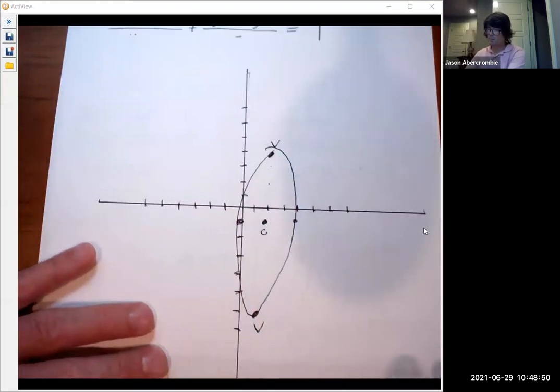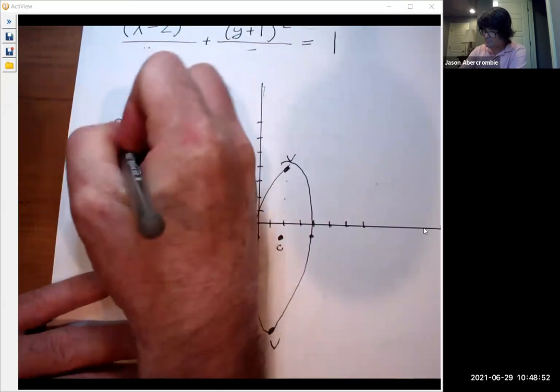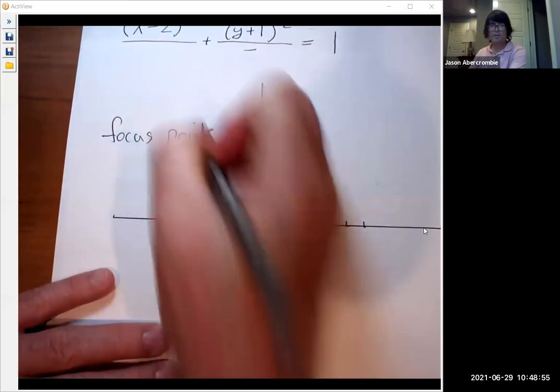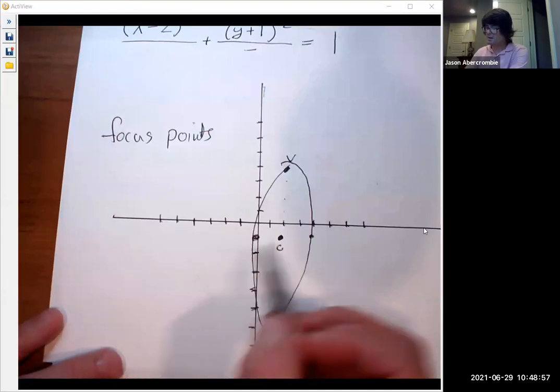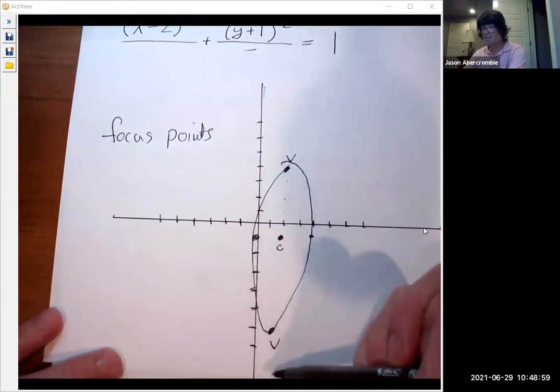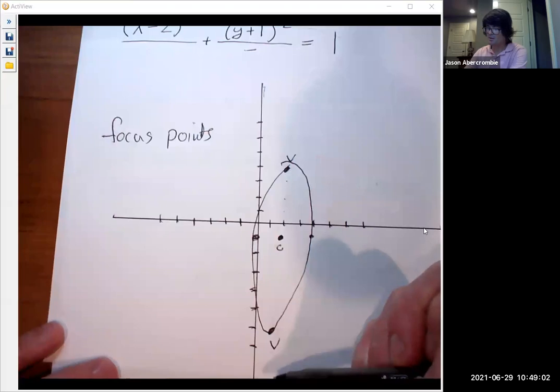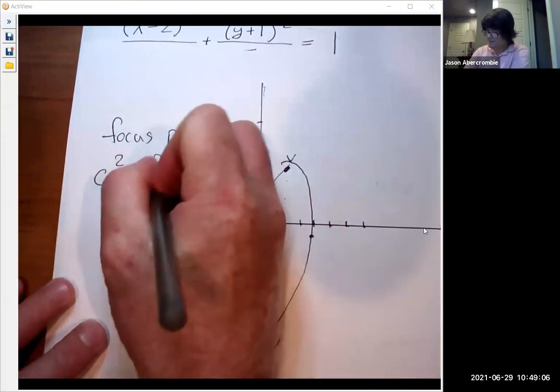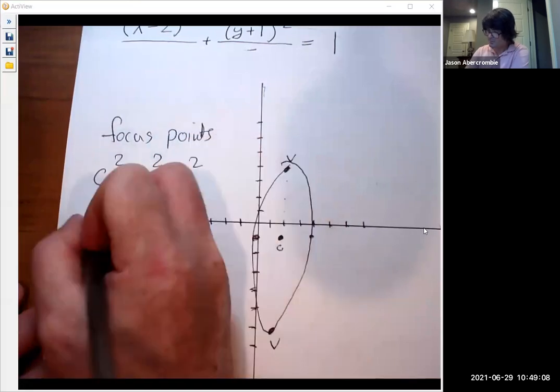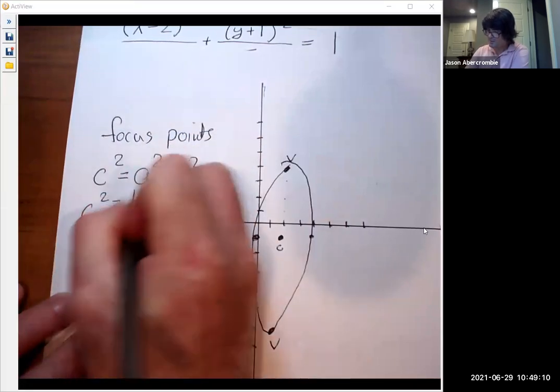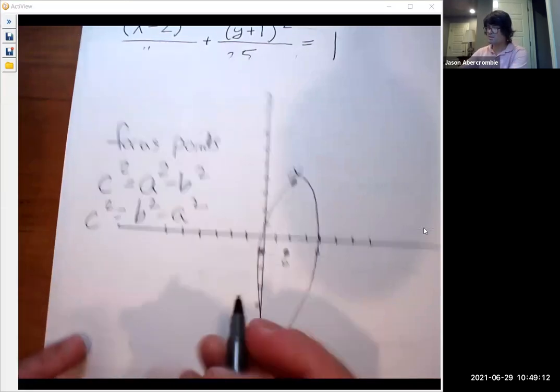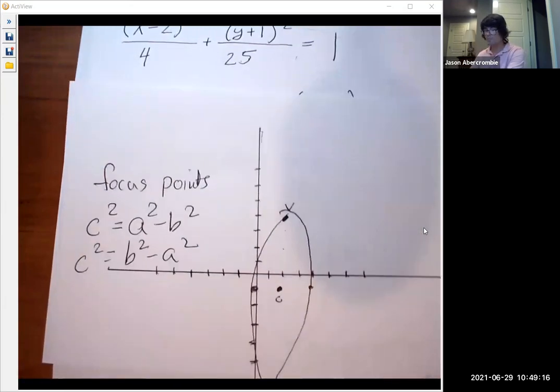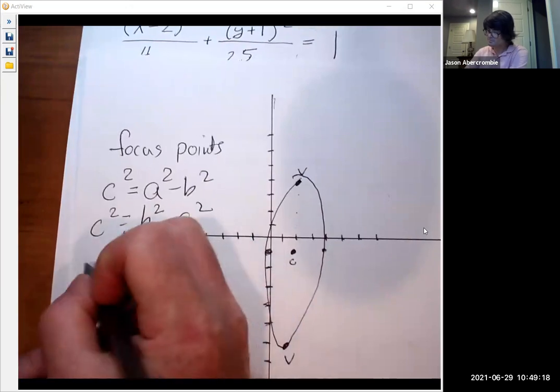And now I want to find my focus points. The focus points are on the long axis. So in this case, they're going to be on the vertical axis, the major axis. And we always do C squared is A squared minus B squared, or C squared is B squared minus A squared. It just depends on which one's bigger. So we just take the bigger one minus the smaller one.